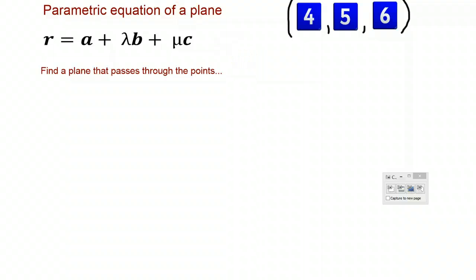So I'm just going to roll the dice to come up with three random sets of coordinates. Our first set of coordinates are going to be 4, 5, 6. I'm also going to have 5, 2, 2, and we're going to have 4, 3, 1.